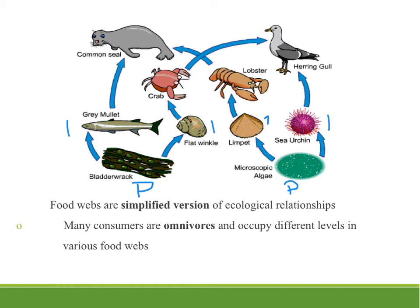The organisms that eat those primary consumers are our secondary consumers. So here the seal is a secondary consumer, as are the crab, the lobster, and the seagull. The tertiary consumers would be eating the secondary consumer. So we see that the seagull also is a tertiary consumer when it eats the crab. The seal can also be a tertiary consumer when it eats the lobster. So again, one organism can occupy several trophic levels depending upon what they're eating.